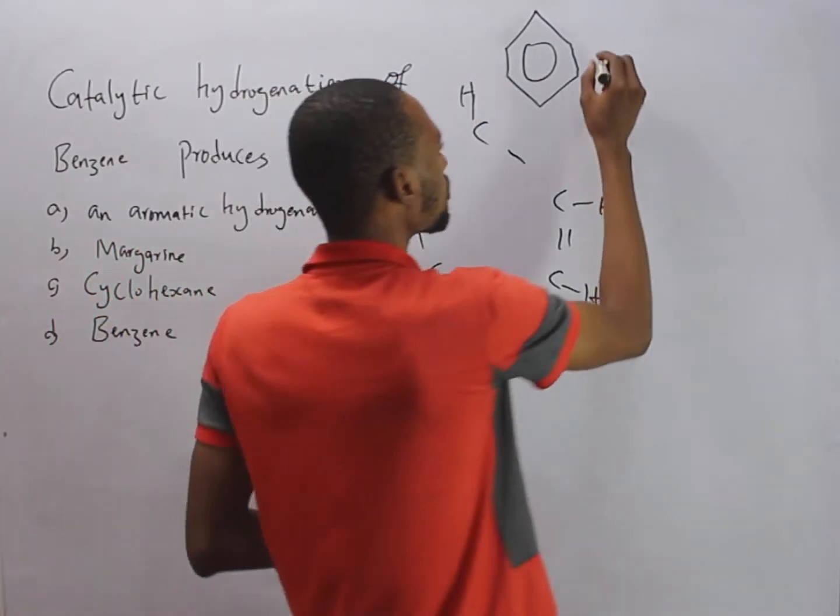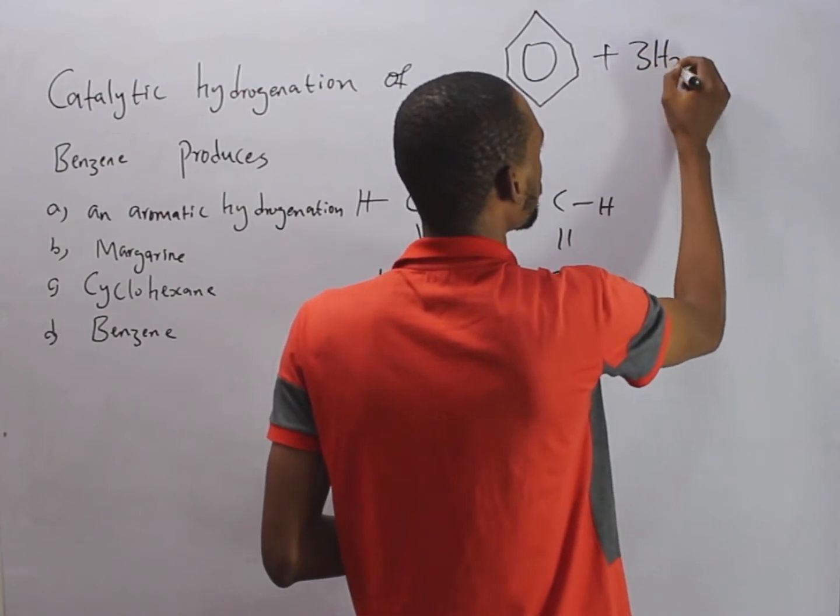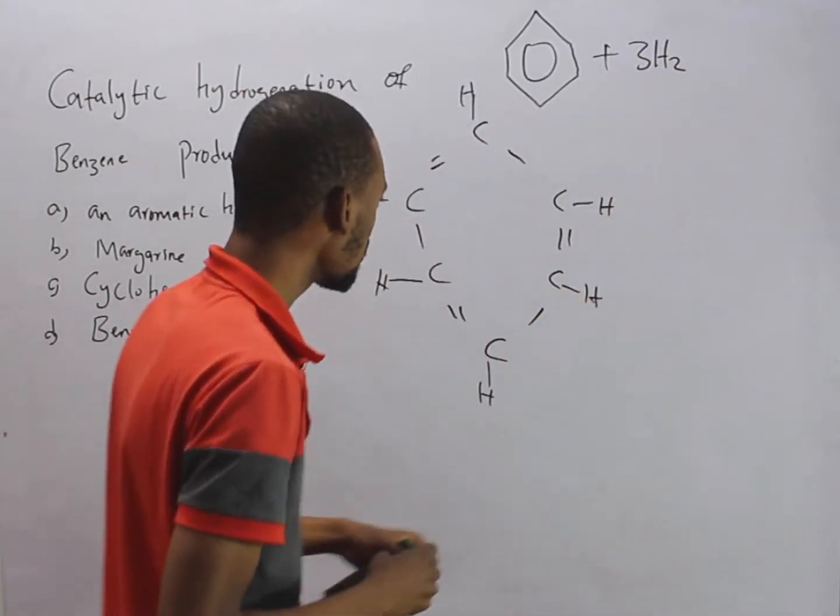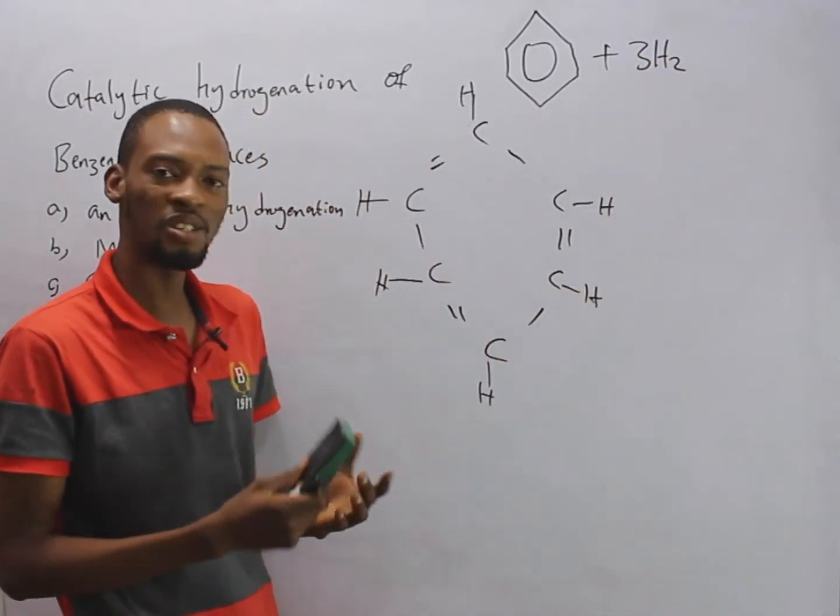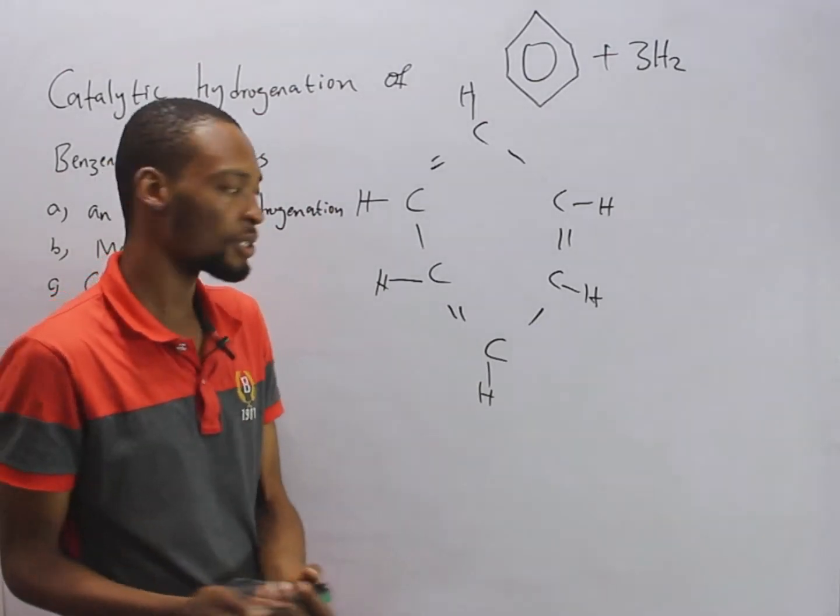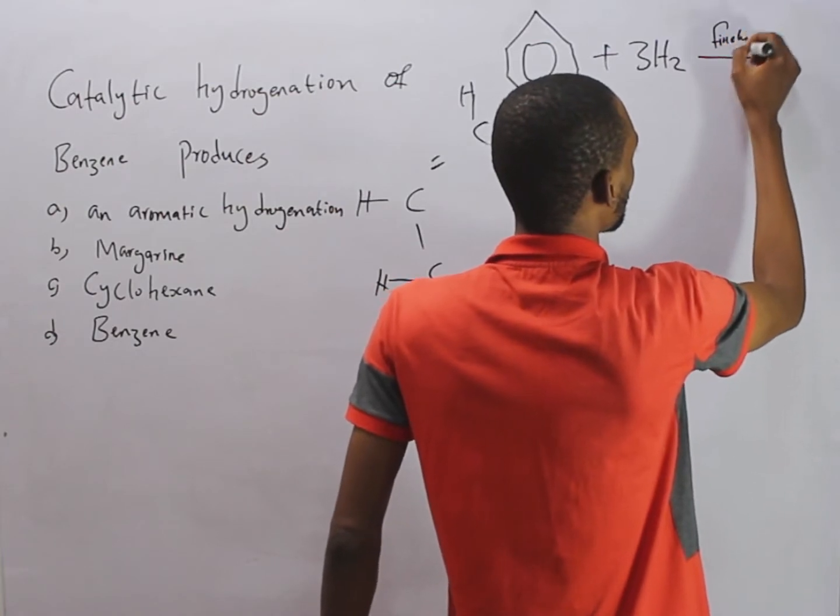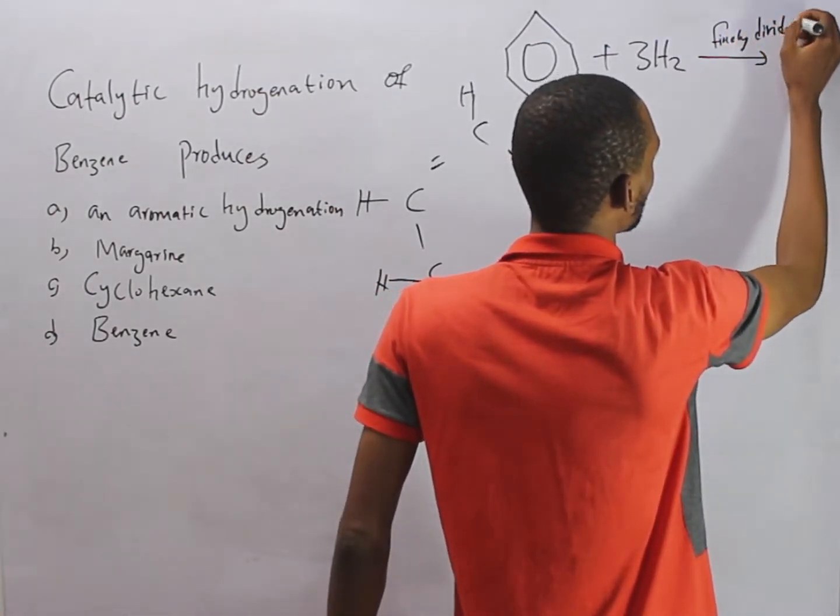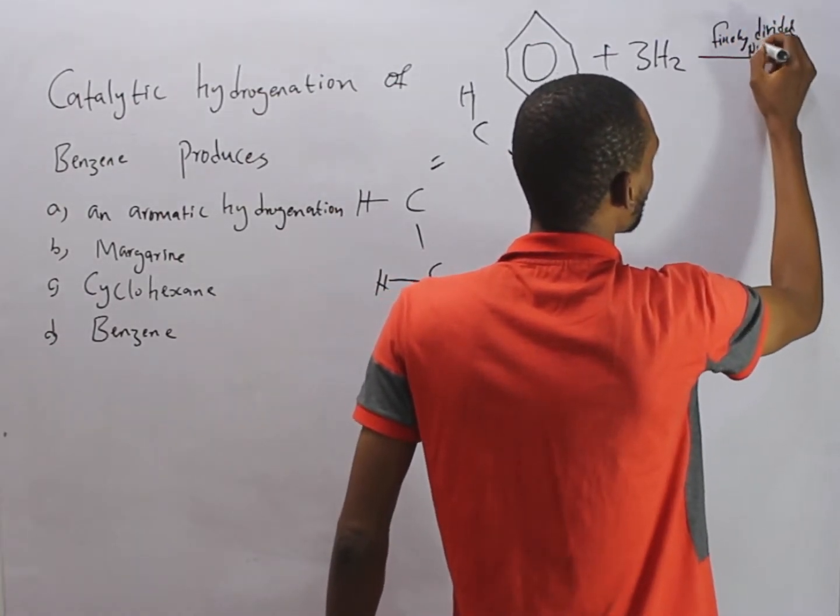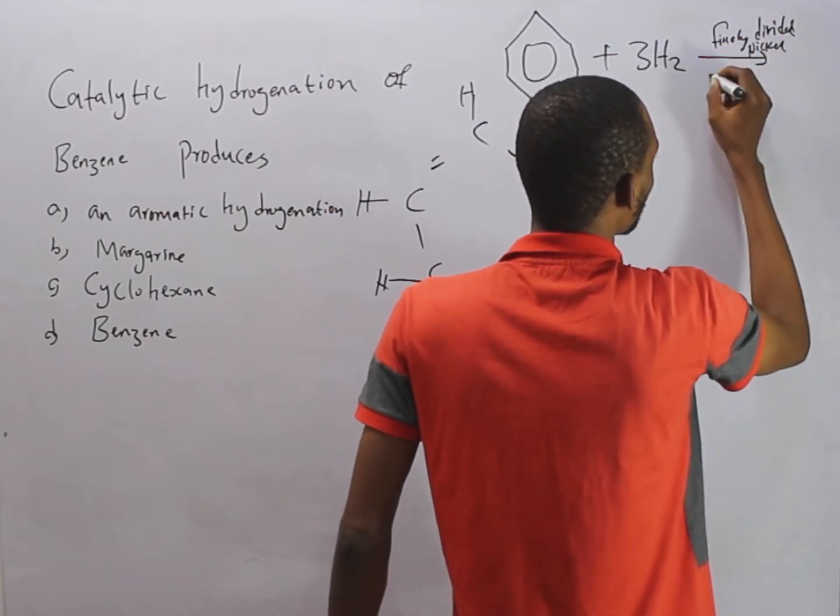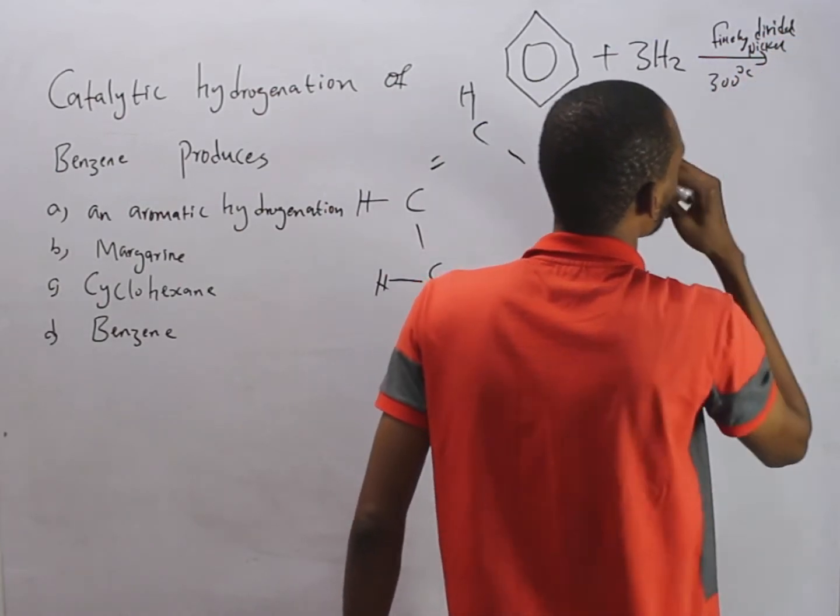Now, when you add hydrogen to benzene, let's say 3H2. Look at it. This is in the presence of at high temperature and the presence of finely divided nickel. So it's finely divided nickel.